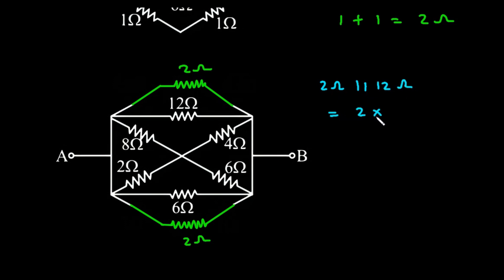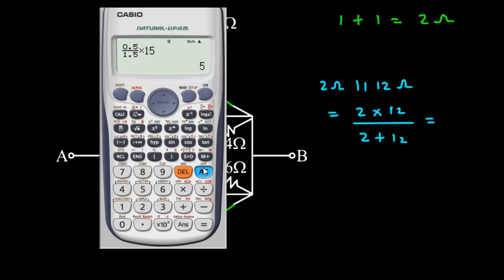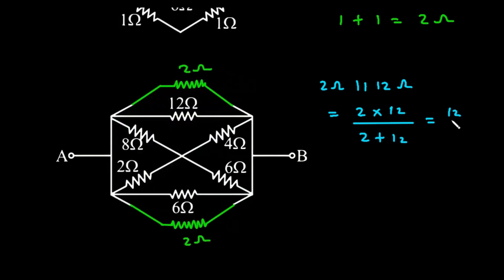It will be 2 into 12 divided by 2 plus 12. If we solve this, we get 2 into 12 divided by 2 plus 12, which is 12 divided by 7 Ohm.